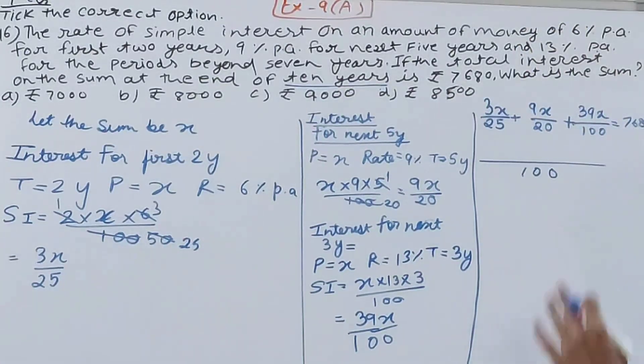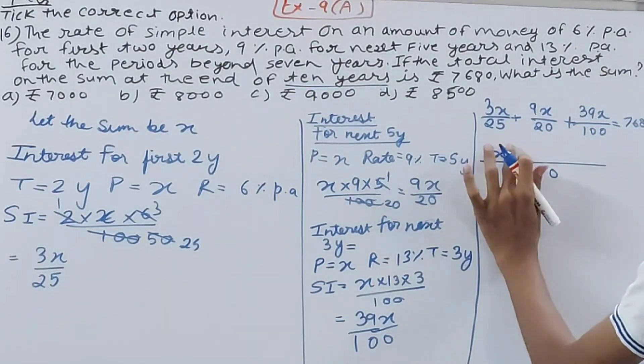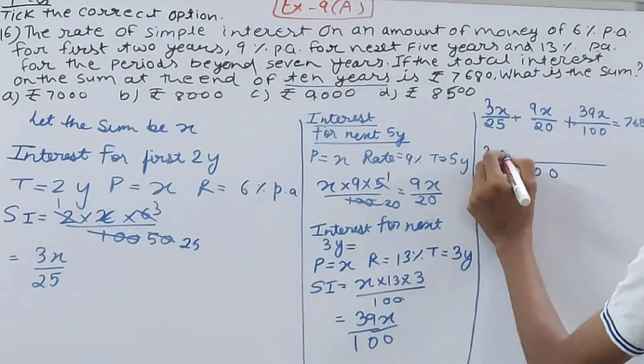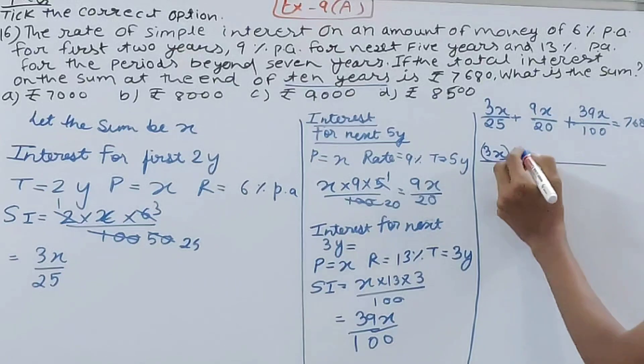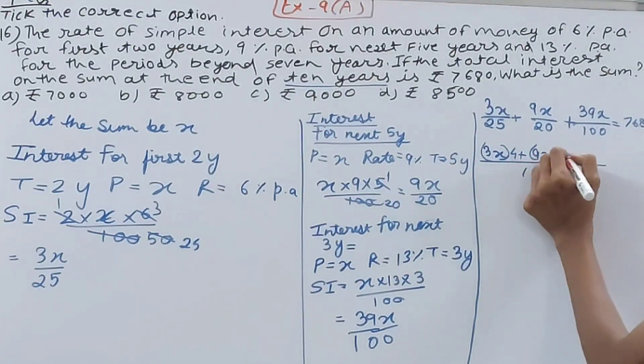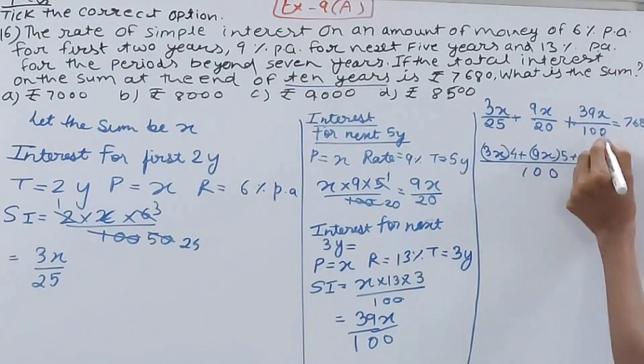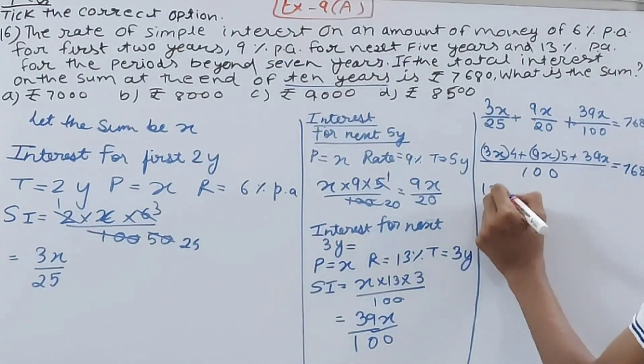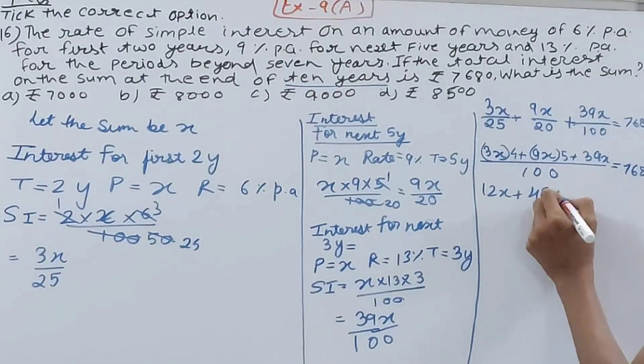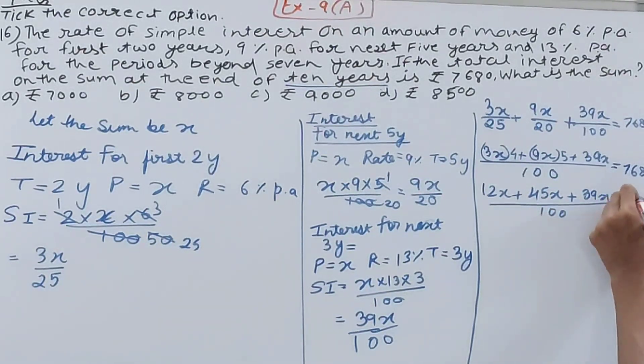So 100 I'll take. Now 3x times 4 because 25 times 4, plus 20 times 5, so 9x times 5, plus 39x that will stay as it is because it already has 100. So this equals 7680. Now 12x plus 45x plus 39x upon 100 equals 7680.